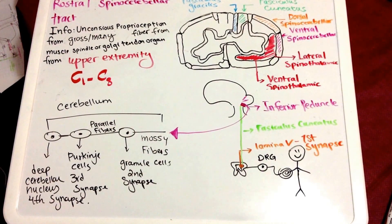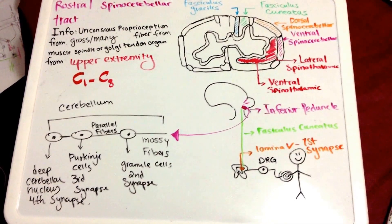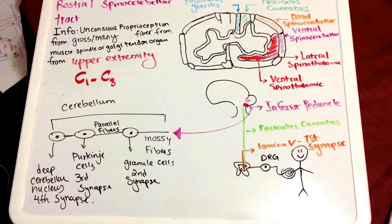The rostral spinocerebellar tract is similar as far as the information that goes inside it to the ventral spinocerebellar tract.